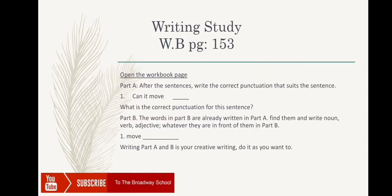Writing study — workbook page 153. Every sentence is missing a punctuation mark — write that missing punctuation. For example: 'Can it move?' — what punctuation will come here? Part B: the words written in Part B appear in the sentences in Part A. Read the sentences and find out if that word is a noun, a verb, or an adjective. The first one has been done for you. Writing Parts A and B are creative writing — do them as you wish.